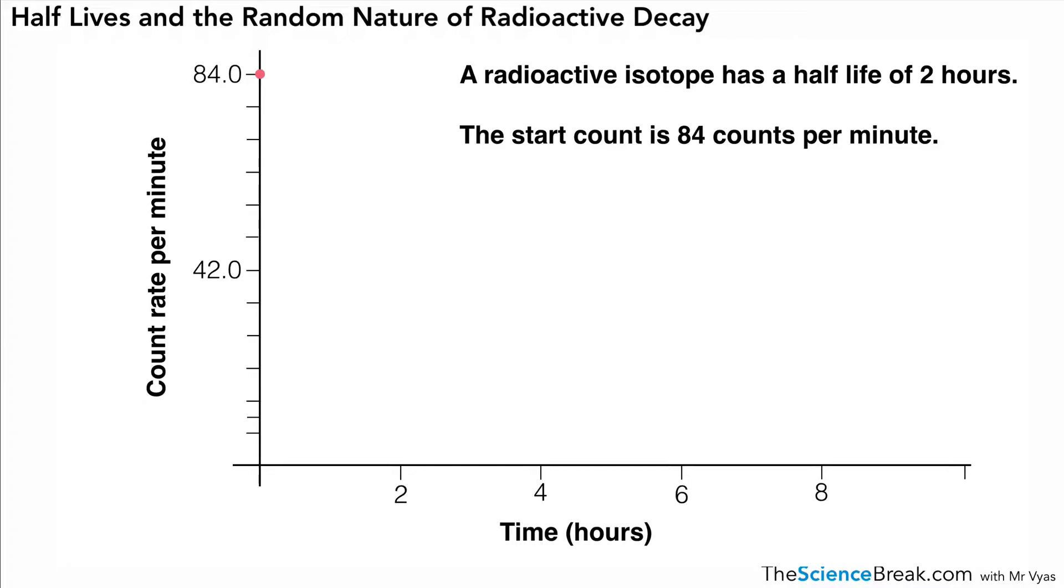We know that the count at the beginning is 84, so at the top I've drawn our first point on the graph at time zero. The next thing to remember is that the count rate falls to half of that value in two hours. Half of 84 is 42, so our next point would be at 42 count rate and two hours.